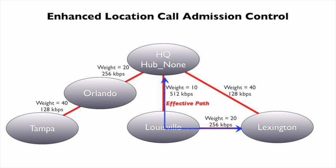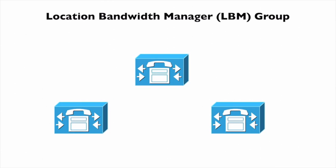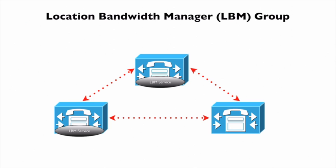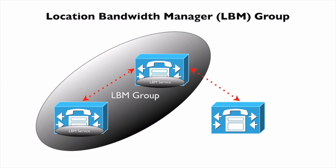To make this work, we have to be running a service on our Communications Manager servers called the LBM — the Location Bandwidth Manager. We could run this LBM service on all servers in a cluster and they would communicate with one another and have full knowledge of the topology. However, if we didn't want to run LBM on all servers, we could dedicate a subset to run it, put those servers in an LBM group, and have the remaining servers simply point to that LBM group.